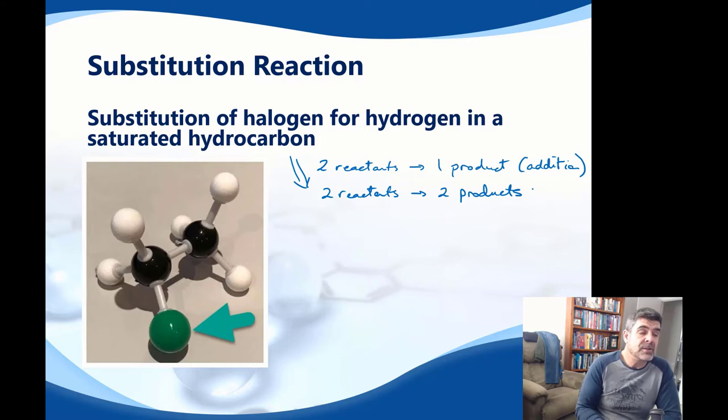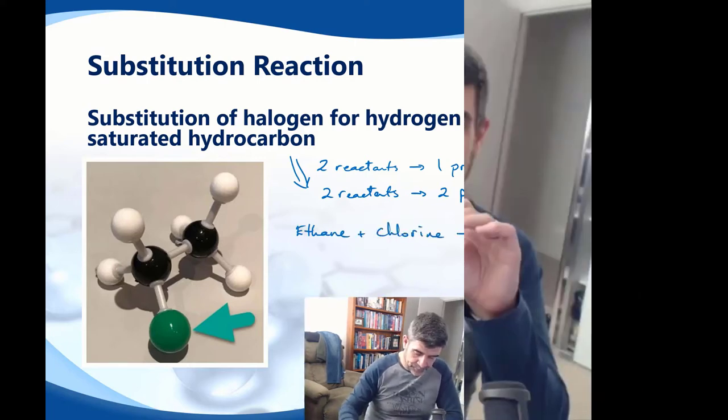One of the simplest ways to do this is to look at the substitution reaction when we have a halogen reacting with a hydrocarbon, in this case a saturated hydrocarbon. We're going to use ethane and add it to chlorine. Ethane has two carbons and six hydrogens. This particular molecule is an alkane because it has a single bond between the two carbons.